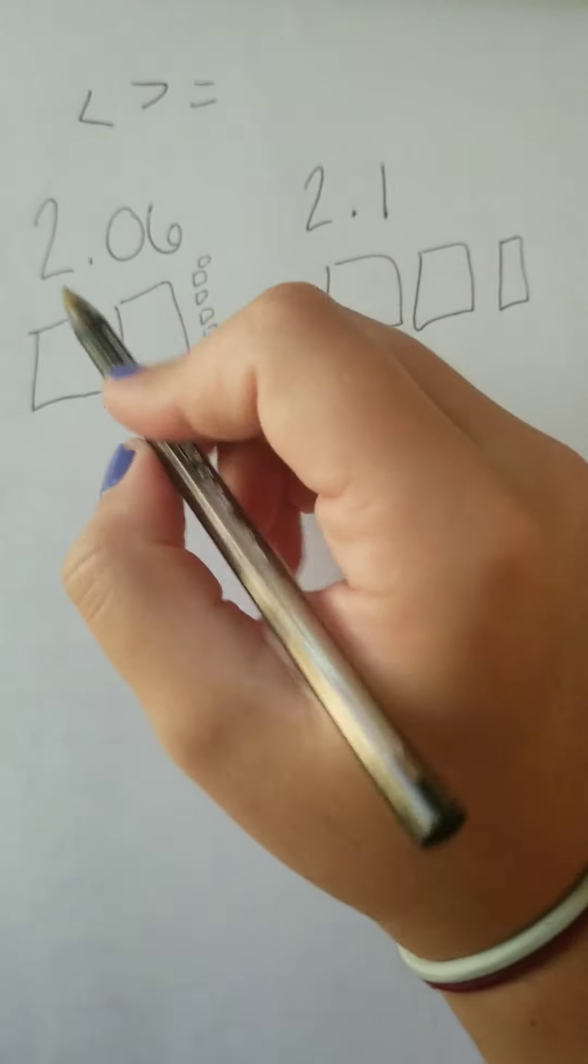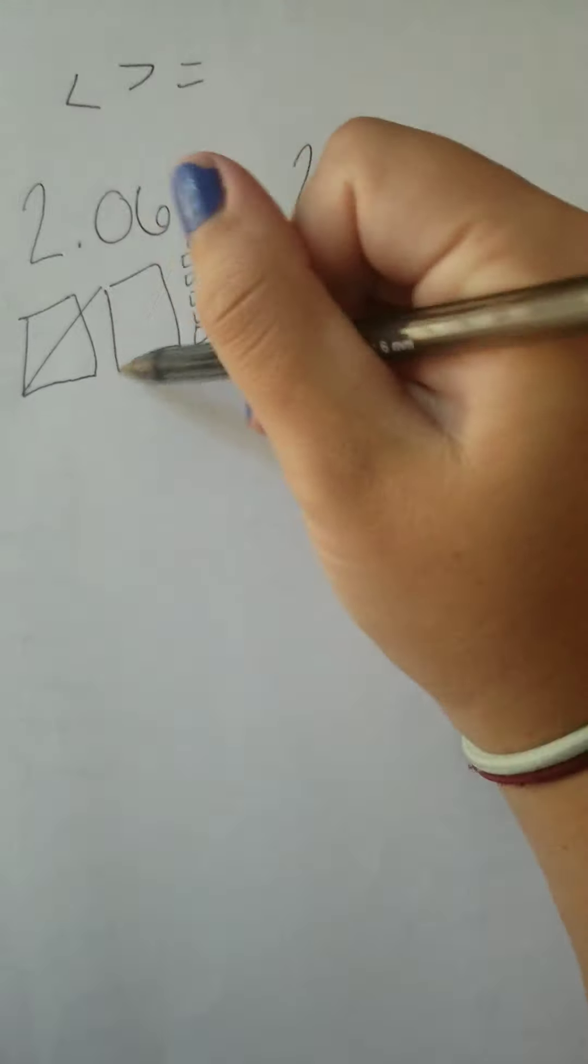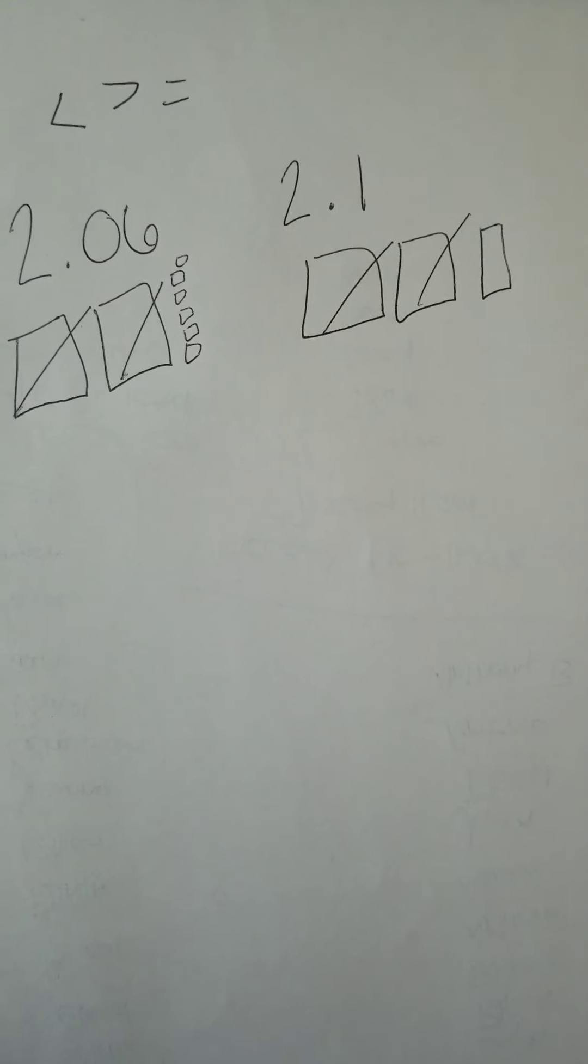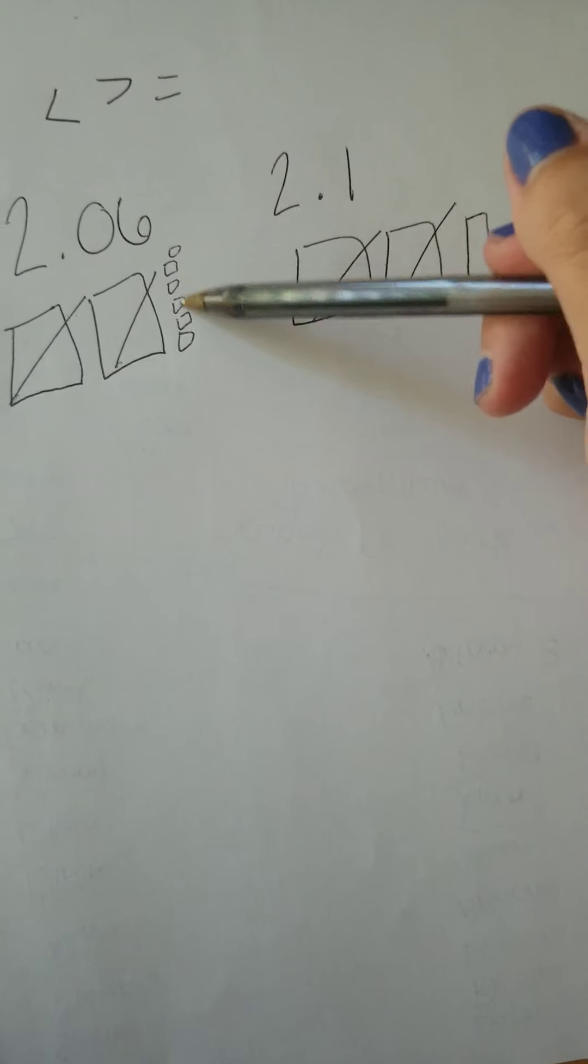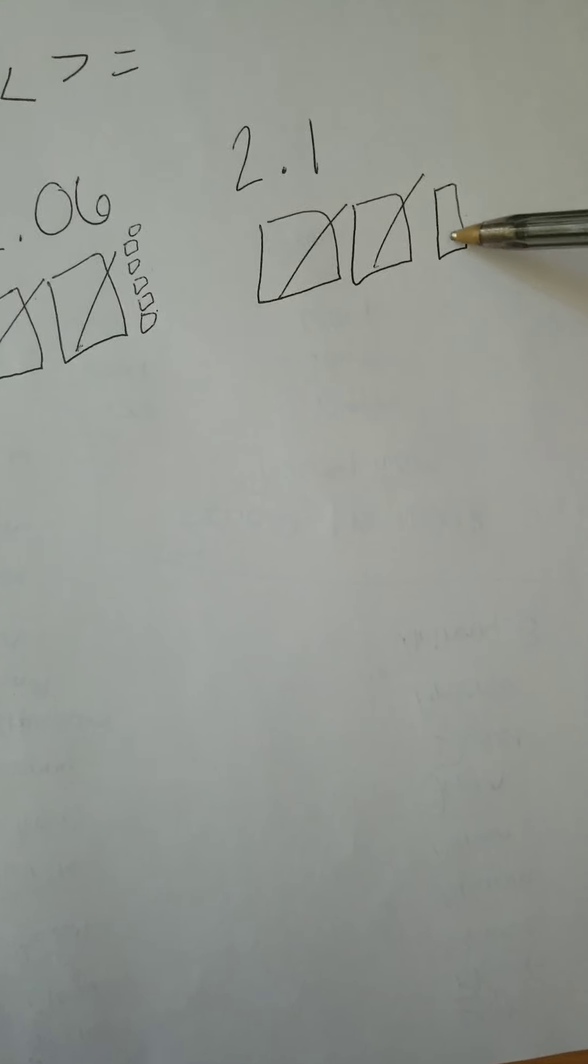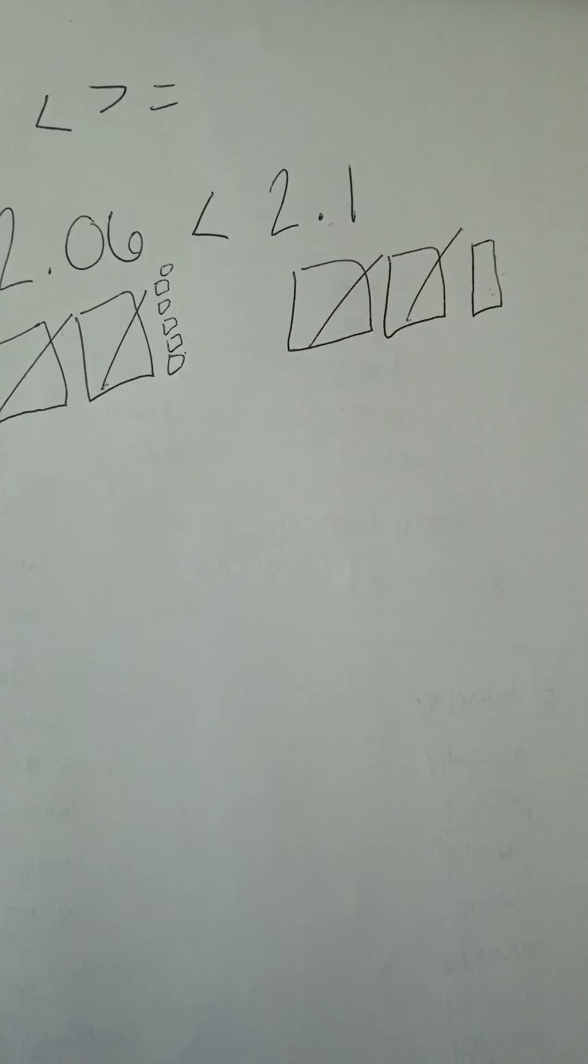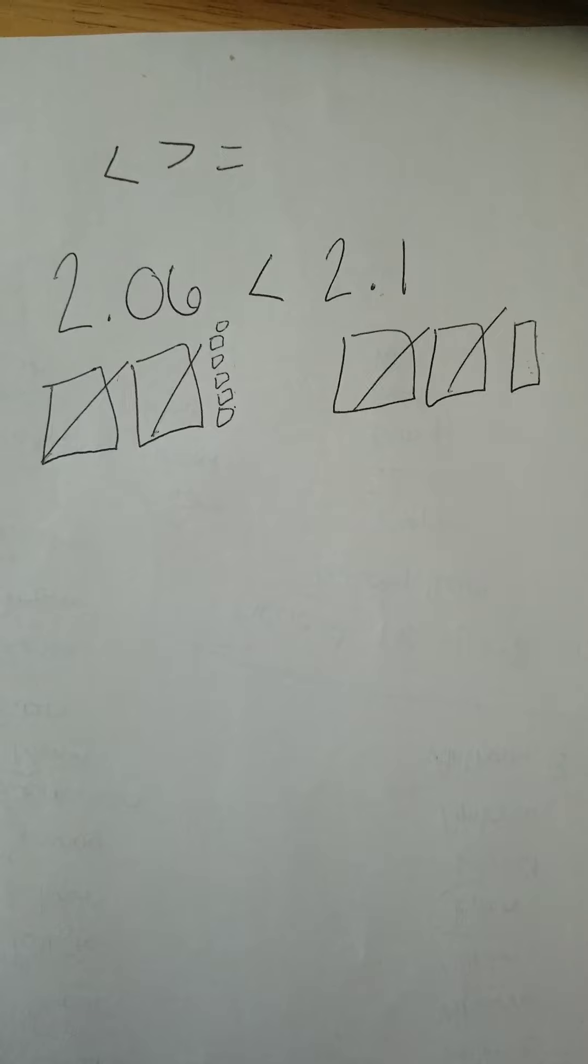And if I look, I can look at this whole number first and go, okay, well, they're pretty similar. That's the same, that's the same, they're still equal. That's the same, that's the same, they're still equal. Well, I have six hundredths, that's a lot more drawings than my one tenth. But my one tenth is the same as ten hundredths. So therefore, this decimal is bigger, two and one tenth.